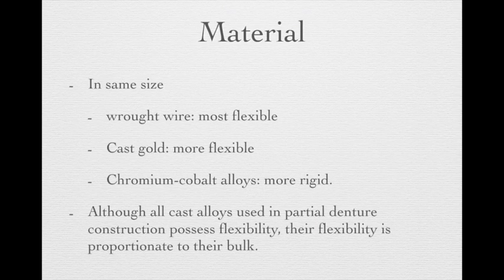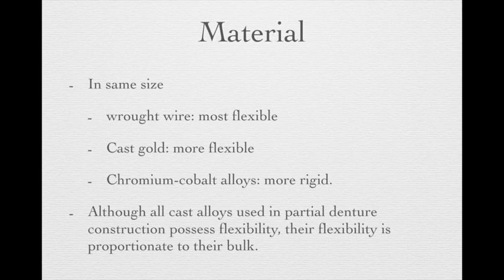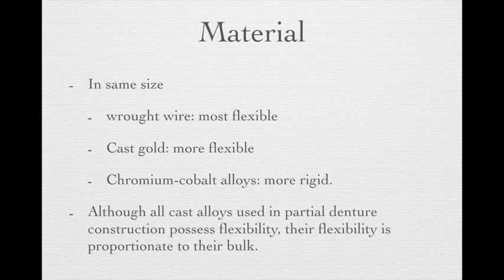The material itself also causes different flexibilities. With the same size, wrought wire material provides the most flexibility. Cast gold is second. Chromium-cobalt alloy is the most rigid. However, even though casting alloys used in partial denture construction have some flexibility, their flexibility is still proportionate to their bulk — more material means more retention and less flexibility.